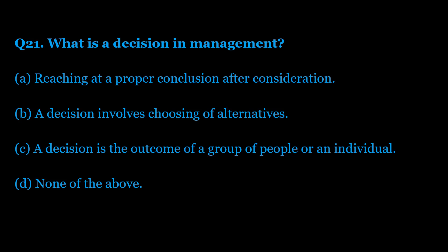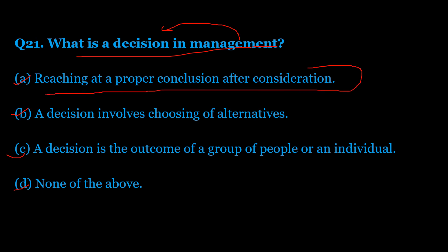Question number 21: What is a decision in management? Option A: reaching at a proper conclusion after consideration. Option B: a decision involves choosing of alternatives. Option C: a decision is the outcome of a group of people or an individual. Option D: none of the above. The correct answer is Option A — reaching at a proper conclusion after consideration.